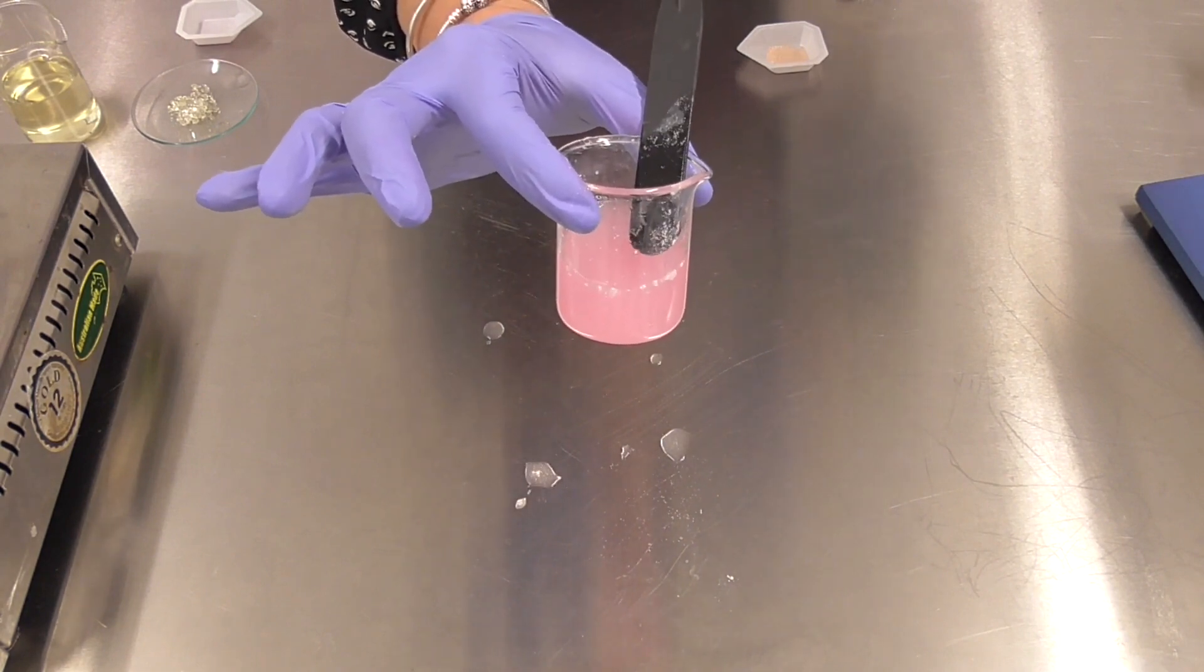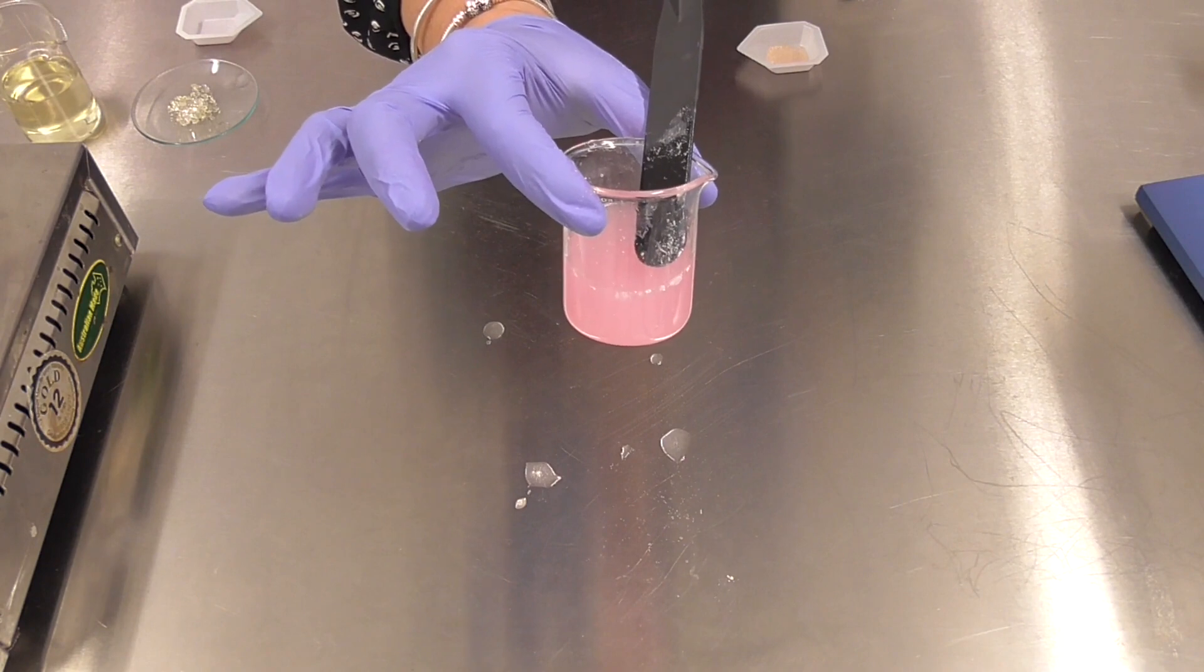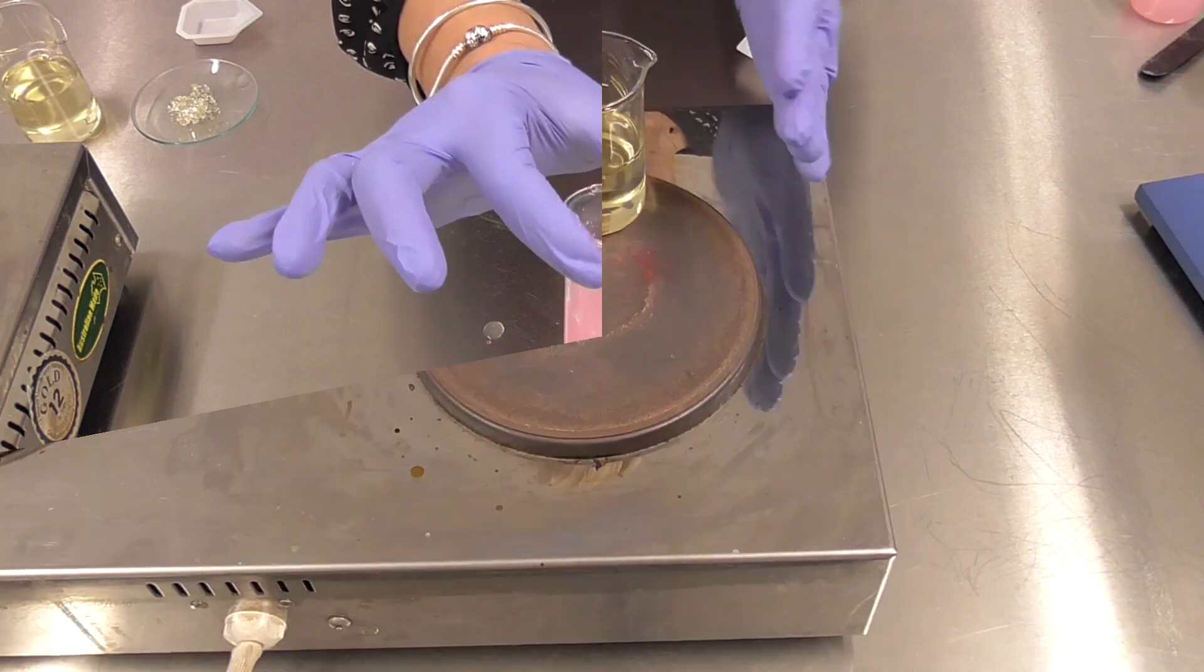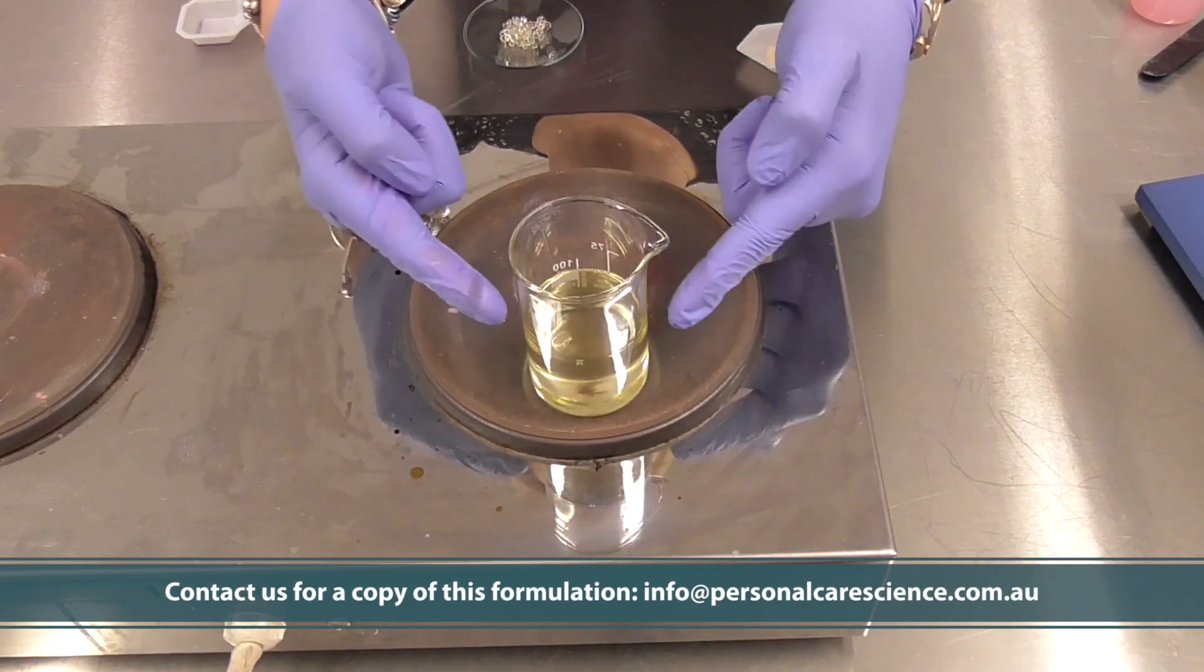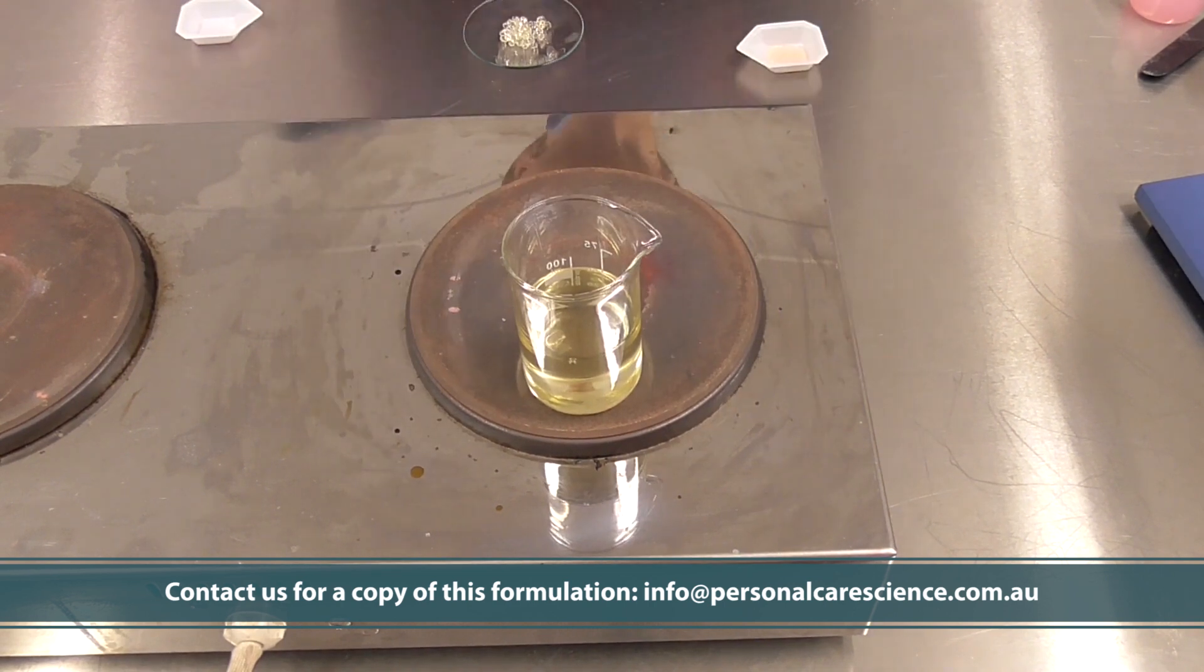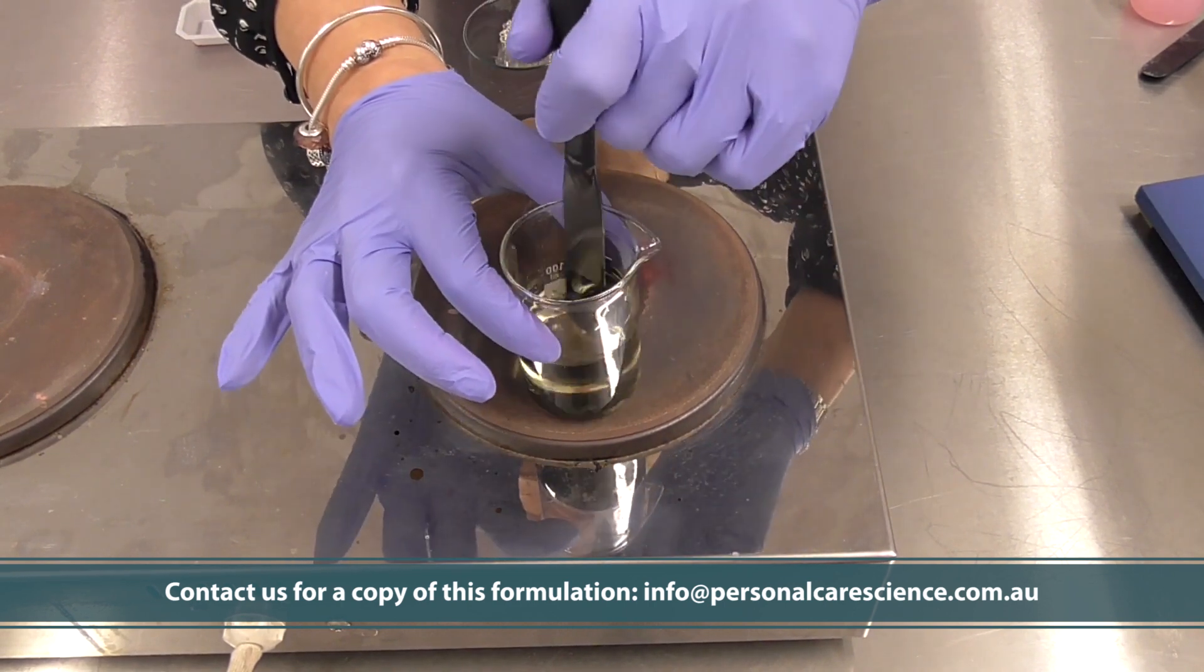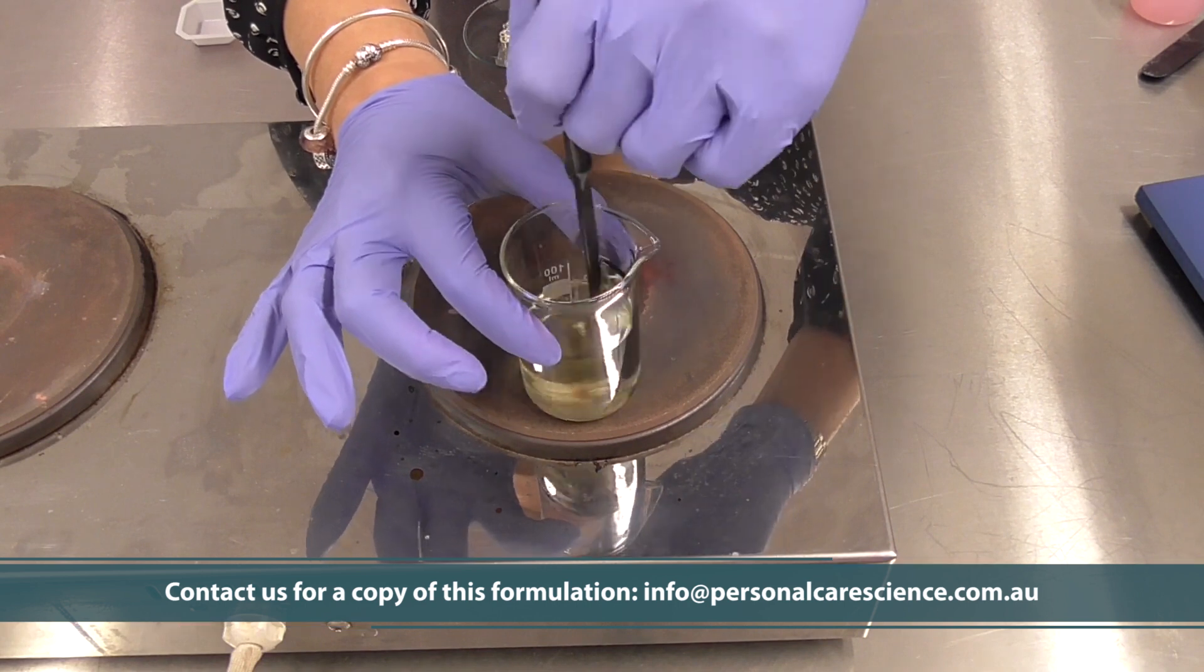So let me show you how I've done this with the lip gloss and you can of course get this formulation. Now first I've got my lipids in this beaker and I'm using polar esters because polar materials work best with the bromo acids.